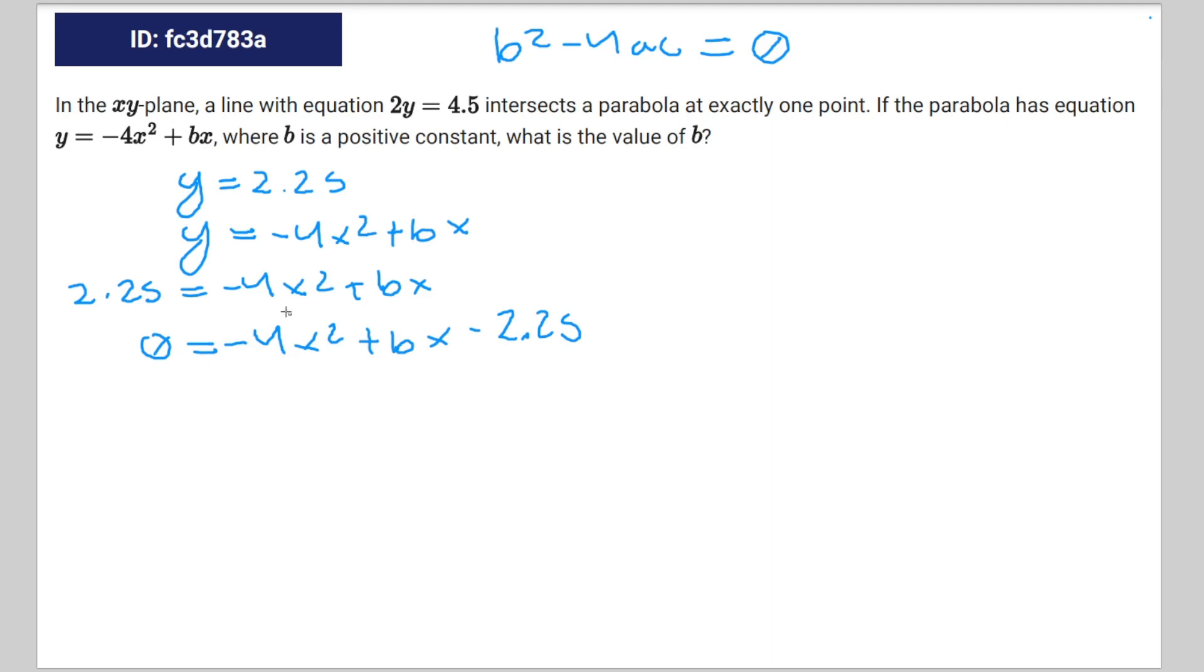So we're going to use negative 4 as a, b as b, and negative 2.25 as c. That's going to be b squared minus 4 times negative 4 times negative 2.25 equals 0.